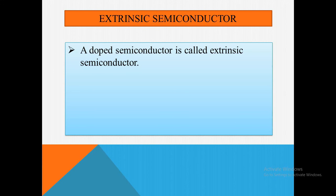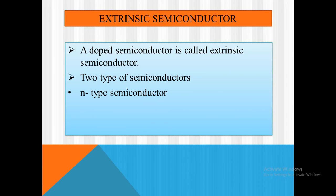Depending upon the nature of impurity added, extrinsic semiconductors are of two types. The first one is N-type semiconductor, which is also known as a donor type semiconductor. The second one is P-type semiconductor, which is also known as an acceptor semiconductor.